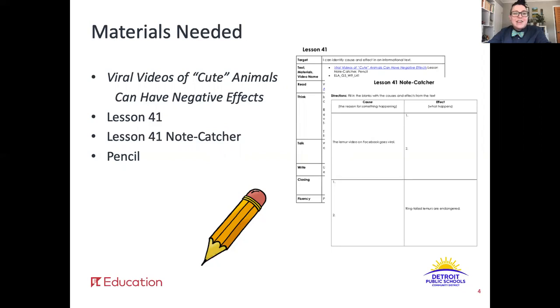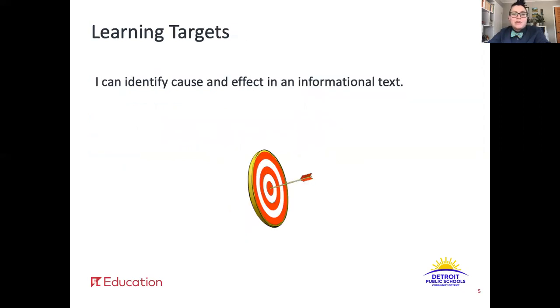Alright, glad you have all your stuff. Let's go over our learning target. It's: I can identify cause and effect in an informational text. This learning target is going to help you understand the connection between the different parts of the article.